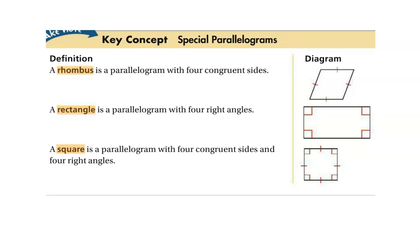A rectangle is a parallelogram with four right angles. Since all of these say they are parallelograms first, all of the properties for parallelograms also apply to these. So a rhombus has all the properties of parallelograms plus the additional ones we'll see here. A square is a parallelogram with four congruent sides and four right angles.